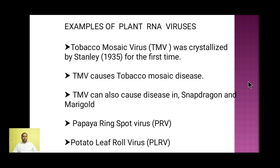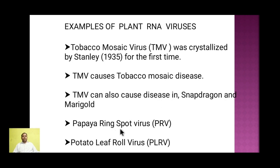Let's see a few examples of plant viruses. Tobacco mosaic virus is a plant virus which was first crystallized by Stanley in 1935, and it causes tobacco mosaic disease. It also causes the same disease in snapdragon and marigold plants. Other plant viruses include papaya ring spot virus and potato leaf roll virus.